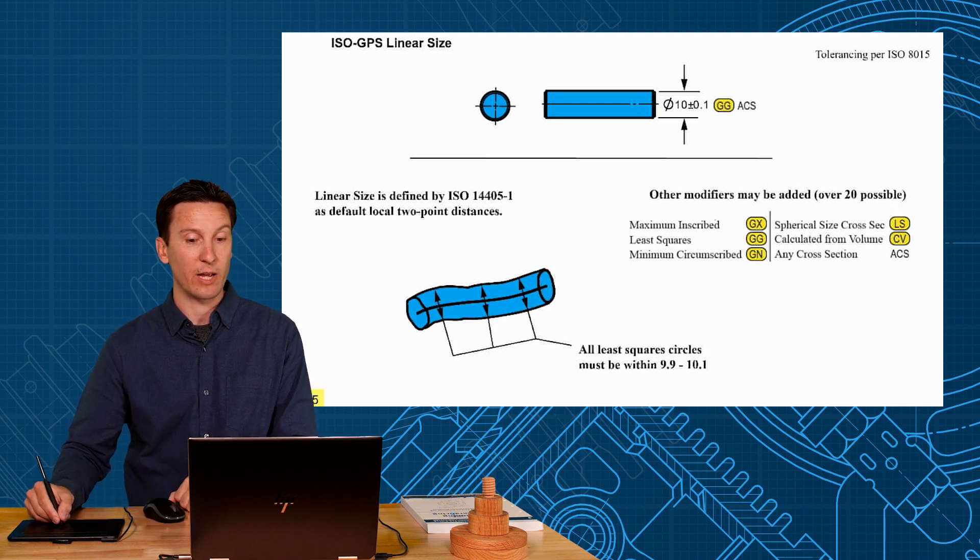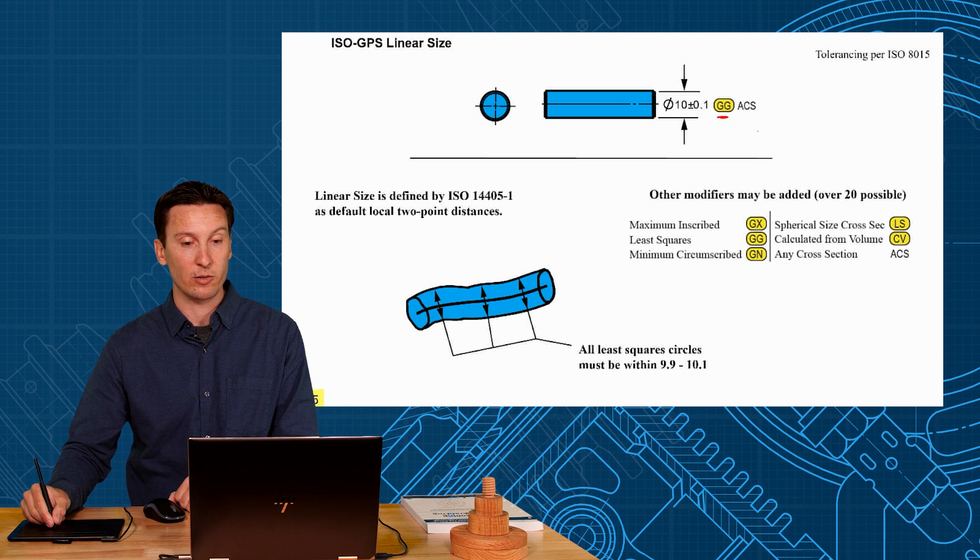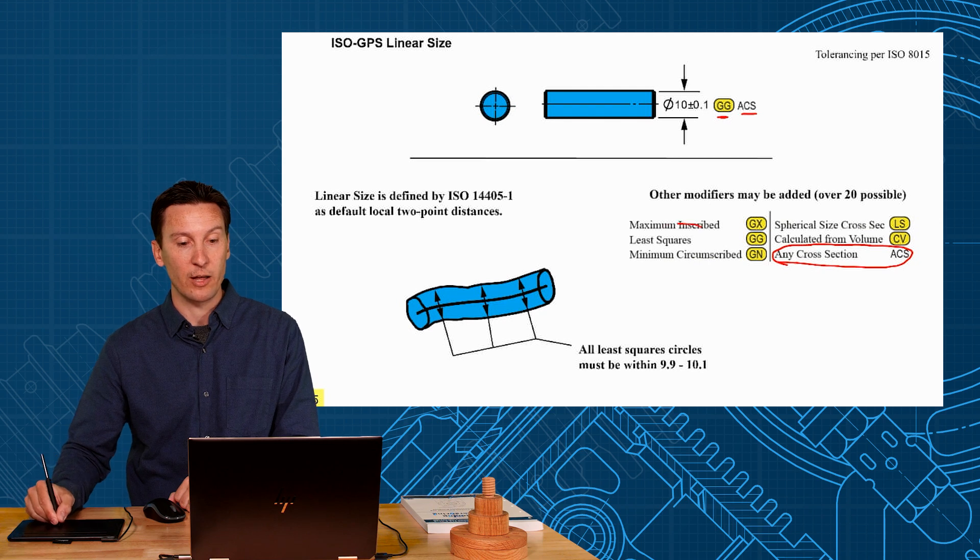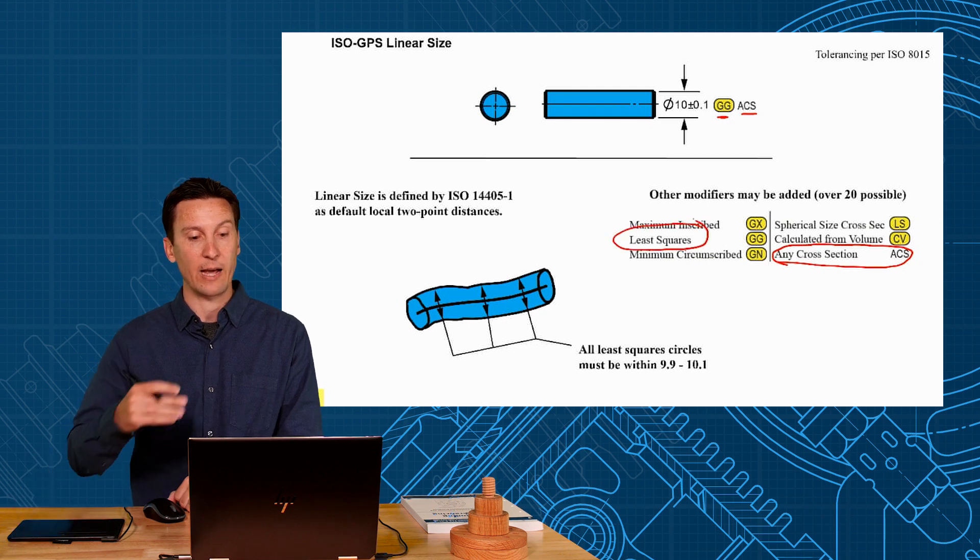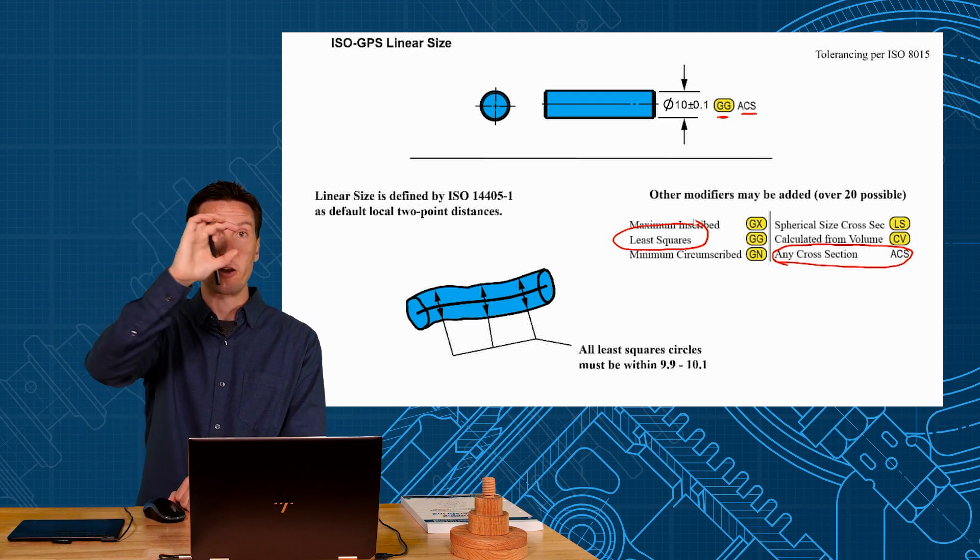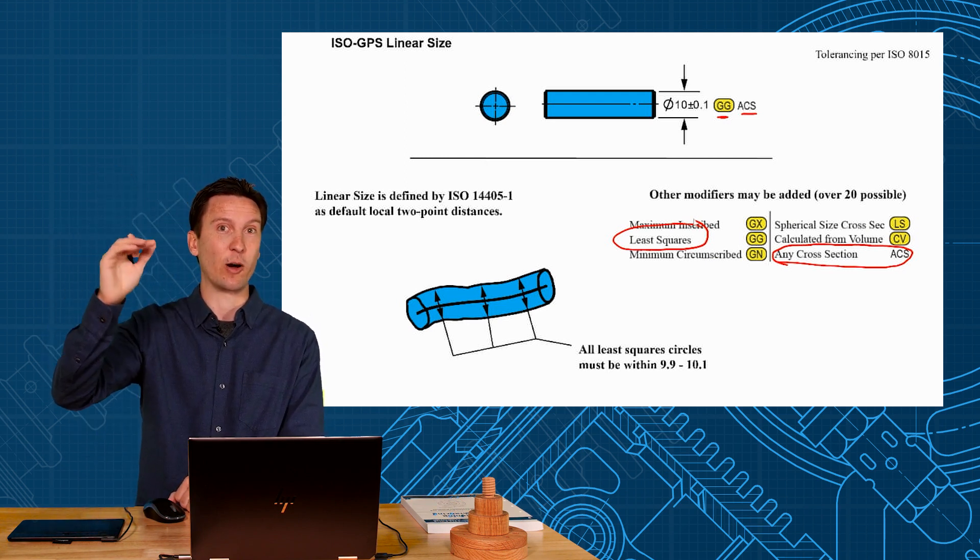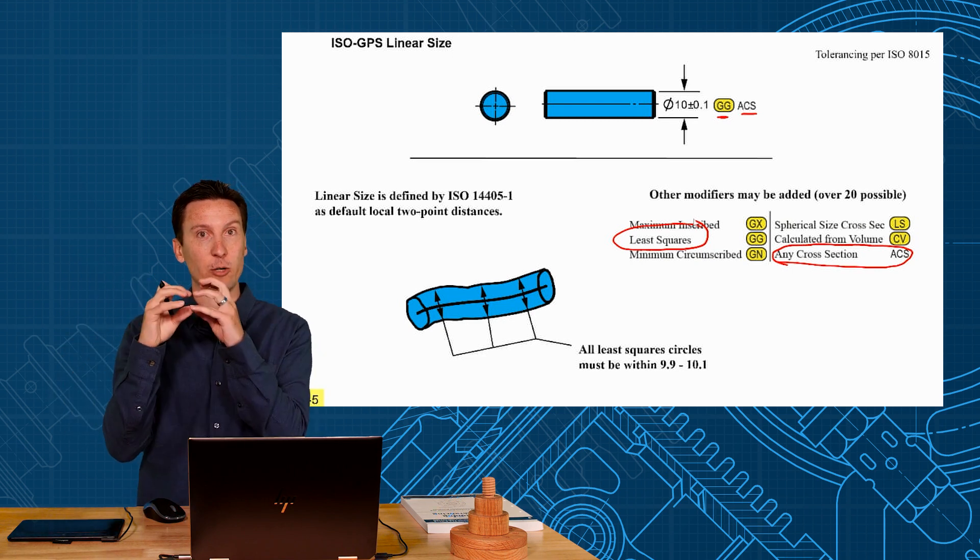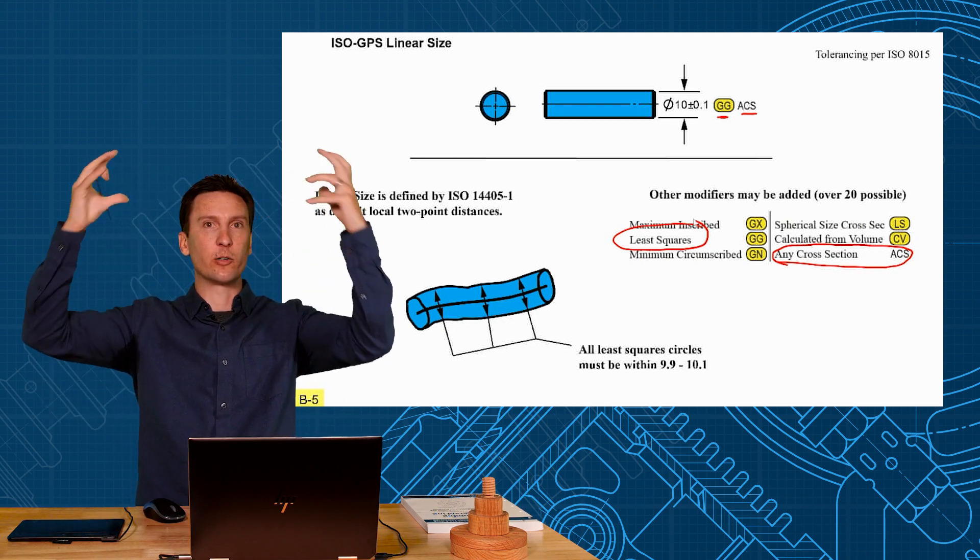You can even combine them here. So we have a GG least squares combined with ACS which stands for any cross section. So at any cross section the least squares circle has to be between 9.9 and 10.1. So you could actually have two: a global least squares and then underneath have a local least squares. So do circle least squares to a tighter requirement and a global least squares to a looser requirement.